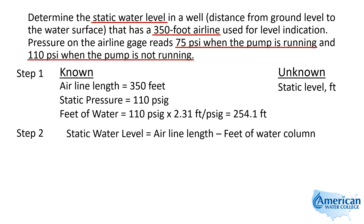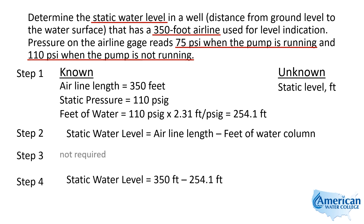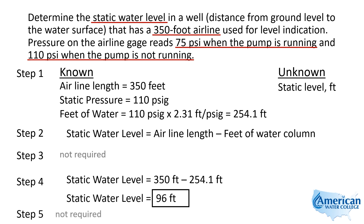Now we can use that to find our answer. Static water level equals the airline length minus the feet of water column. So we take 350 feet and subtract 254 feet, which gives us a static water level of 96 feet. This tells us that the water surface is 96 feet below ground level.